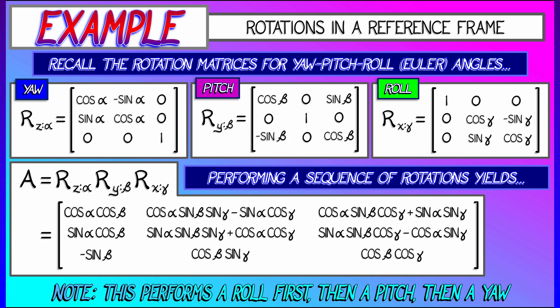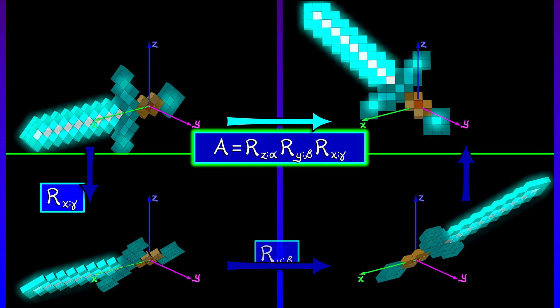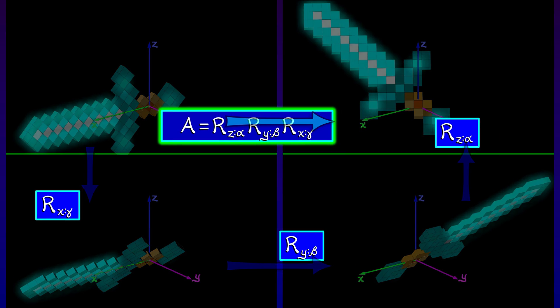You can check that we get the following 3x3 matrix. I don't recommend memorizing this. This is sometimes called a zyx rotation matrix because of the order in which you do these. Remember, the multiplication is written from right to left. So first, I rotate about the x-axis by an angle gamma, then I rotate about the y-axis by an angle beta, then I rotate about the z-axis by an angle alpha. I multiply those matrices in order from right to left.